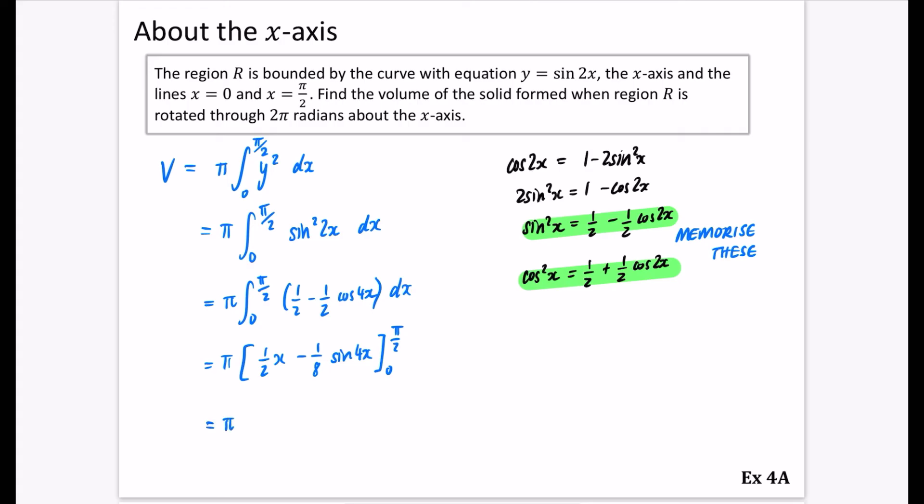I'm going to leave that pi outside the front, and I'm going to have 1 half of pi over 2 minus 1 eighth of the sine of pi over 2 times 4 is just 2 pi. Now, when I put 0 in here and here, it's just going to be 0, so I can just leave it like it is.